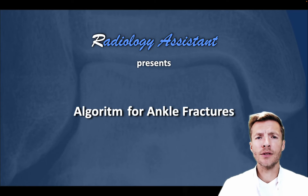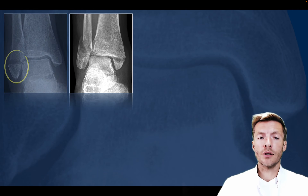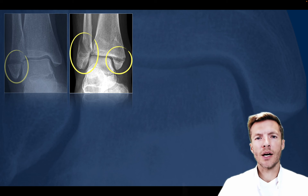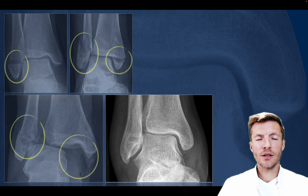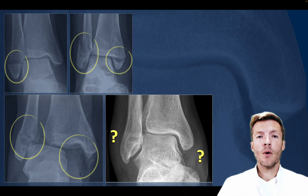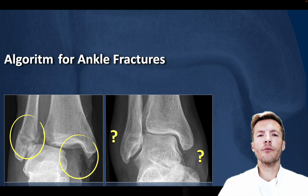Hi, I'm Frank Smithuis from the Radiology Assistant and today we're going to talk about an algorithm for ankle fractures. Ankle fractures are very common and luckily most cases are not so difficult. Some cases are more difficult because they have more than one fracture, or show clear unstable fractures with obvious widening of the medial clear space. But some cases can be very difficult, with soft tissue swelling but no visible fracture or signs of instability, yet the ankle fracture is in fact unstable. That is where the algorithm for ankle fractures will help you to properly assess fractures and predict instability, even in cases where no obvious abnormalities are seen.